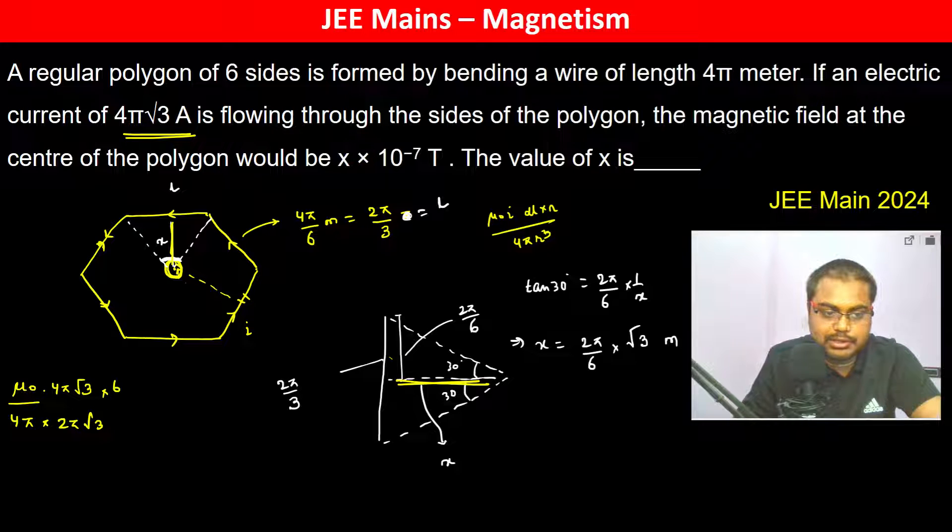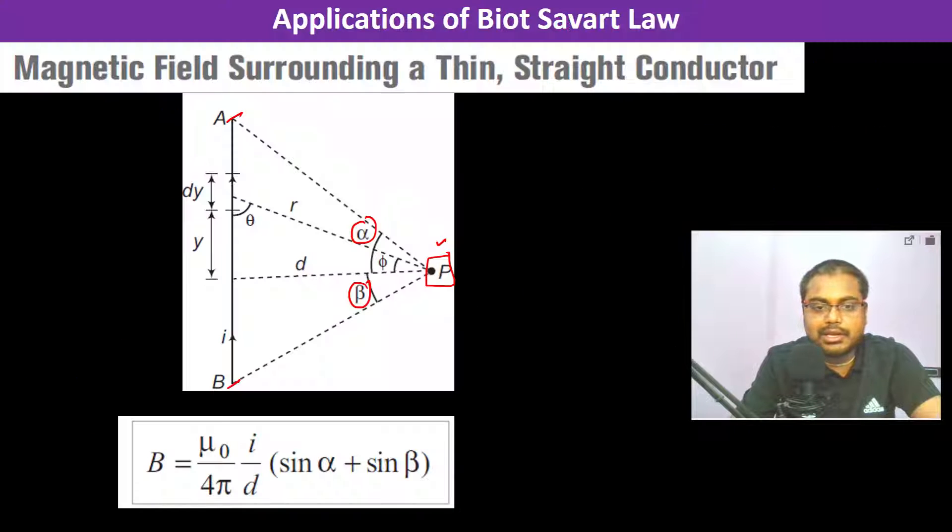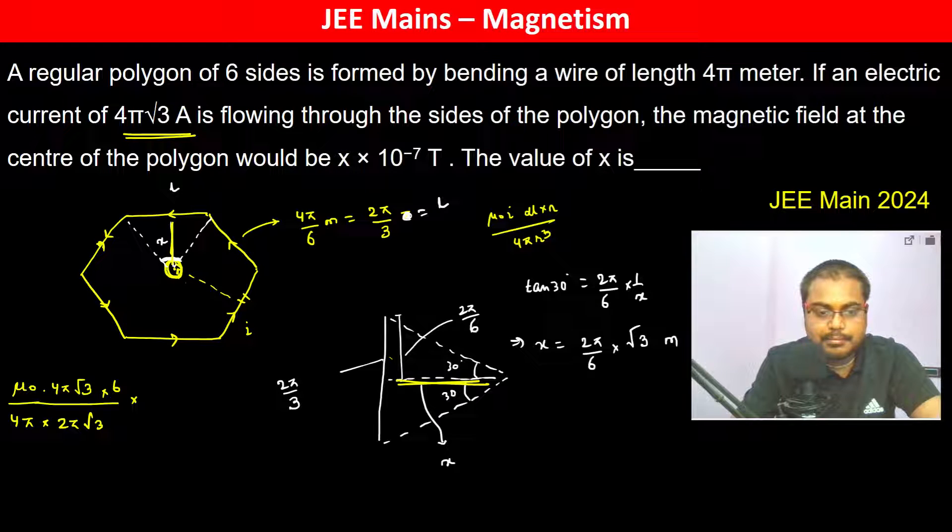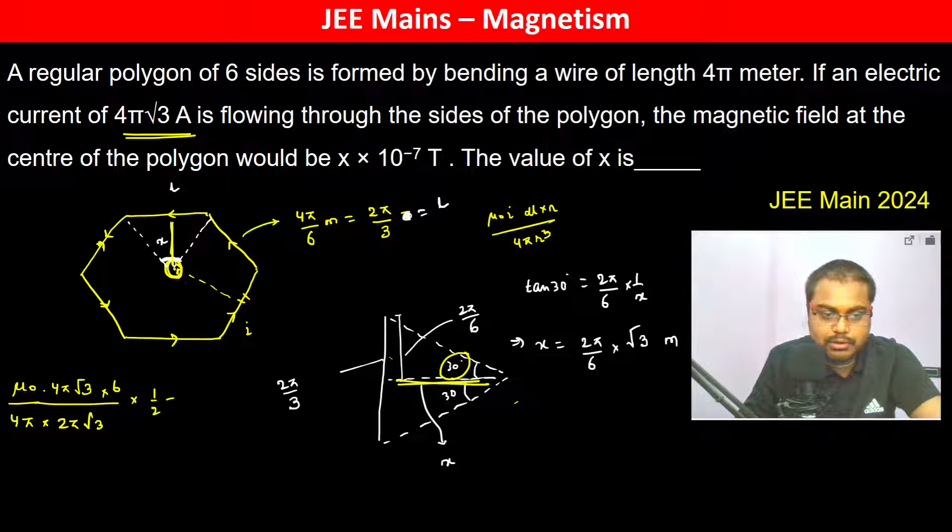sin α + sin β: sin 30° = 1/2, so 1/2 + 1/2 = 1. All 6 sides contribute, so multiply by 6. μ₀ = 4π × 10⁻⁷.